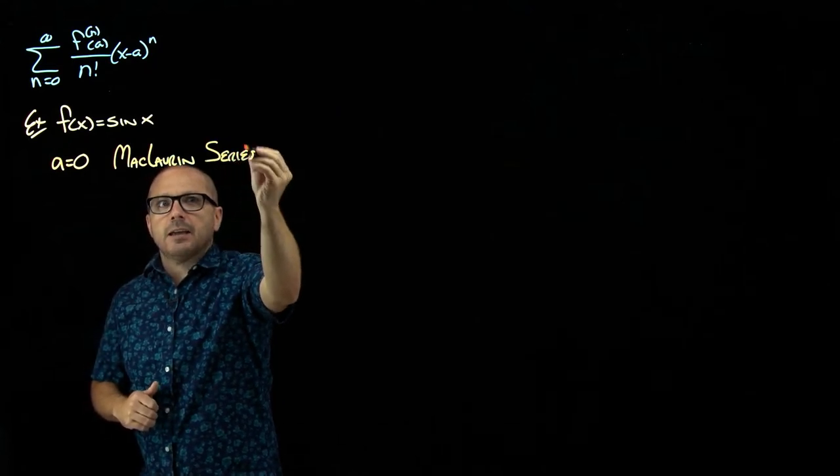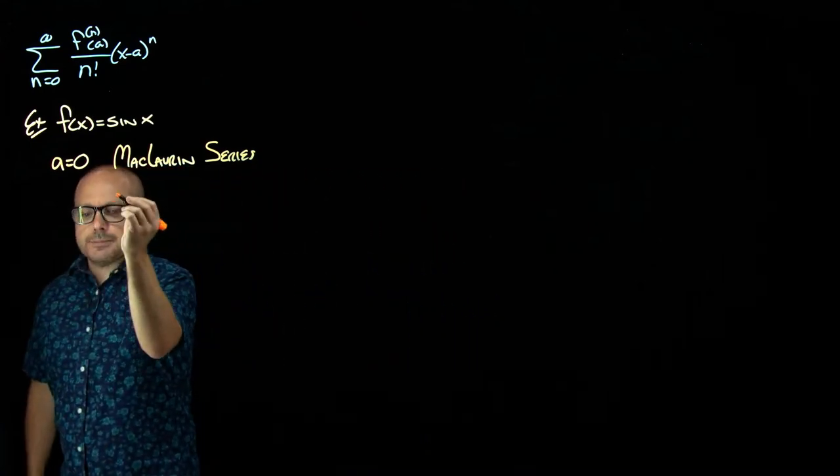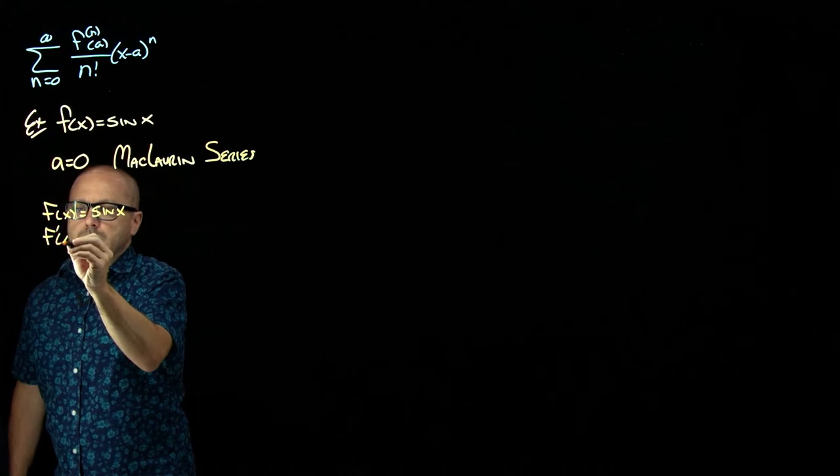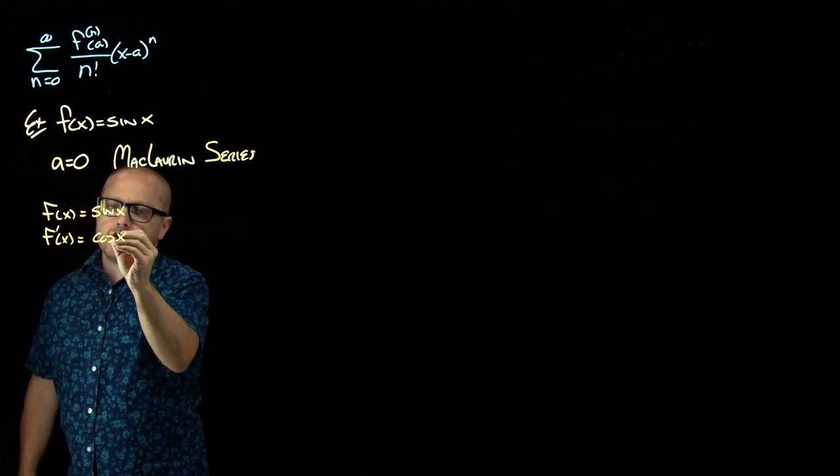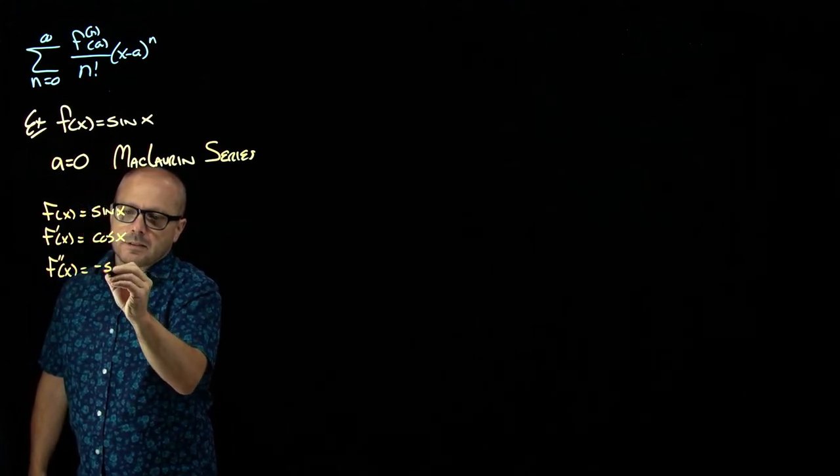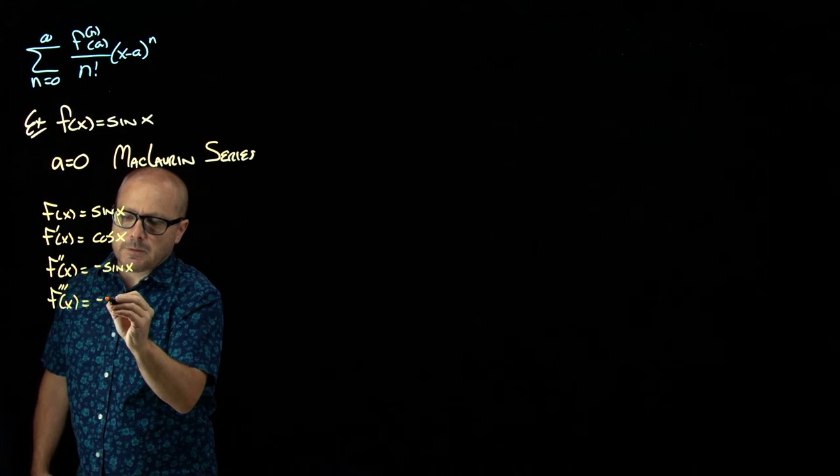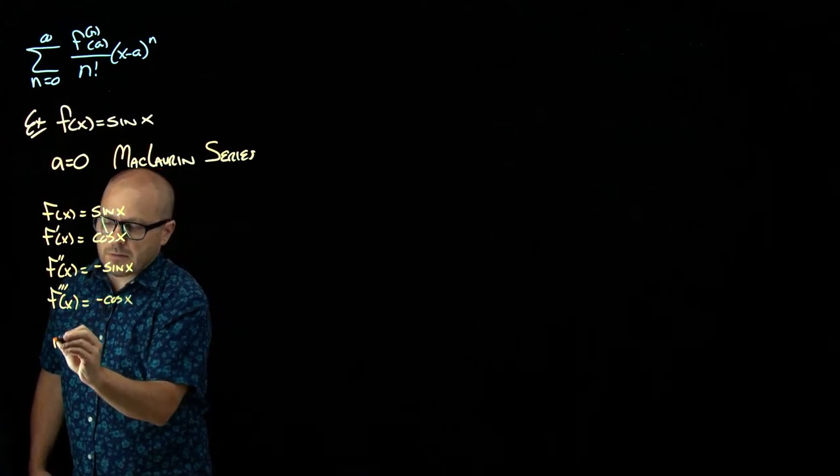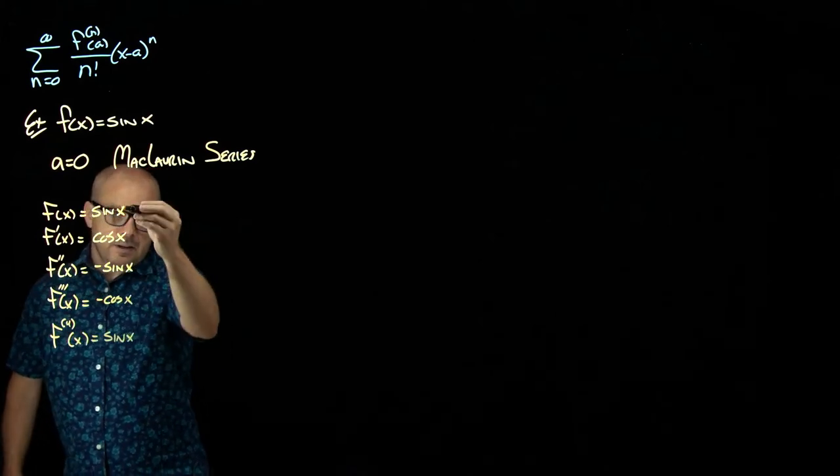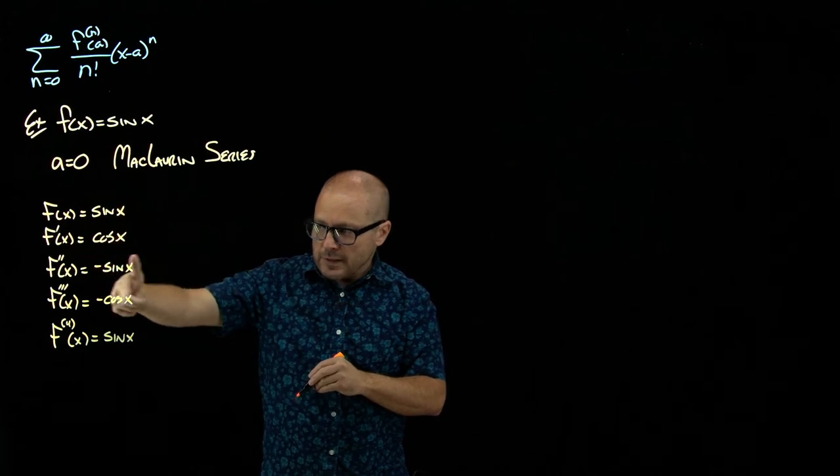Okay. So now that we've selected our a, let's try and find a pattern to our derivatives. So the function is sine, first derivative cosine, and the nice thing about sine is if you differentiate it enough, you will end up back restarted. So this is not going to get unmanageable. By the fourth derivative, you are back to sine.